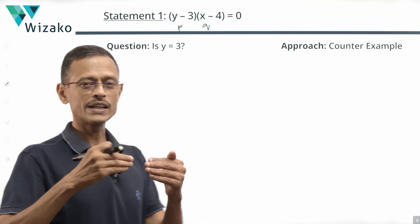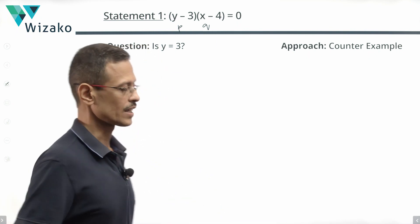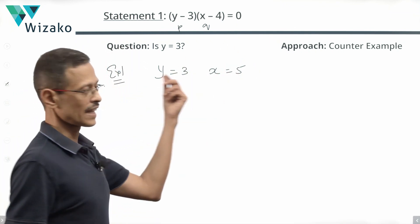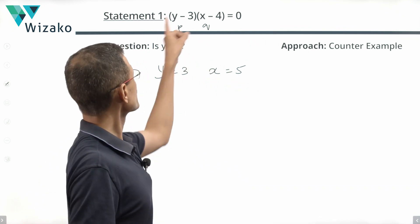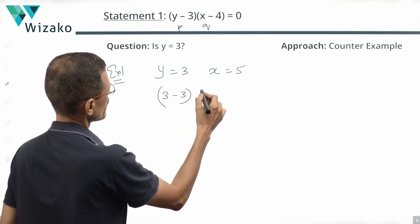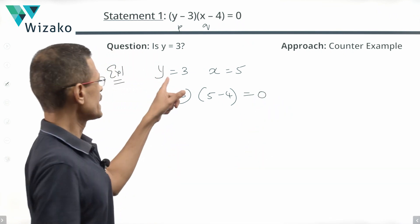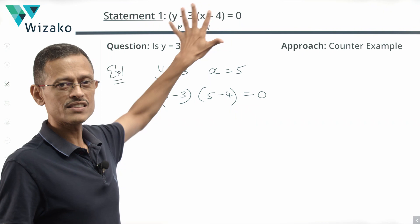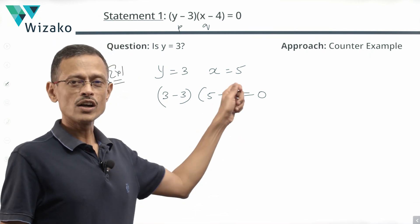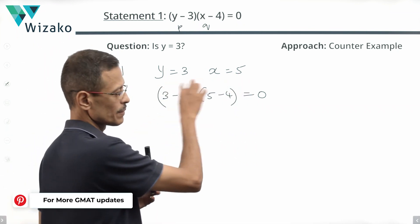I'll provide two examples that satisfy the statement. Example 1: y = 3, x = 5. Plugging in: (3 − 3)(5 − 4) = 0 × 1 = 0. This works. Note x is not 4 here — don't assume x can only be 4. So y = 3, x = 5 satisfies the equation, and in this case is y equal to 3? Yes. The answer would be yes for this example.